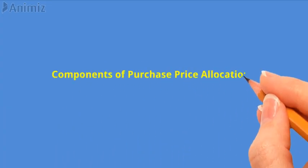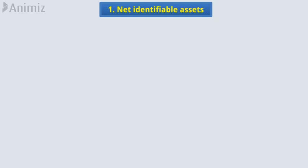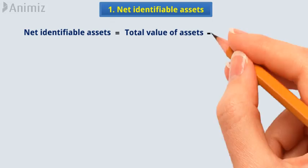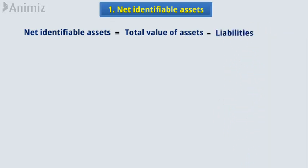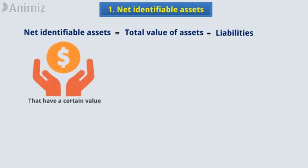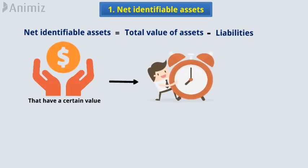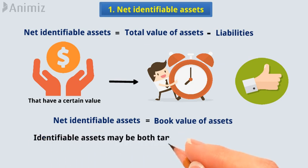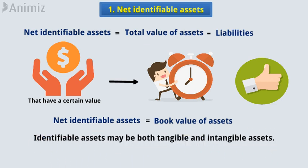Components of purchase price allocation. Number 1: Net Identifiable Assets. Net identifiable assets refer to the total value of assets of an acquired company after liabilities have been deducted. Identifiable assets are those that have a certain value at any particular point in time and those that have clearly, reasonably quantified benefits. These assets represent the book value of assets on the acquired company's balance sheet. Identifiable assets may be both tangible and intangible assets.